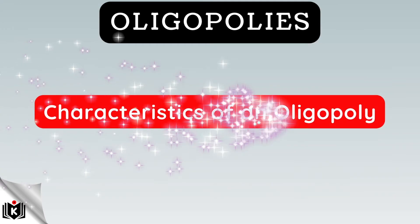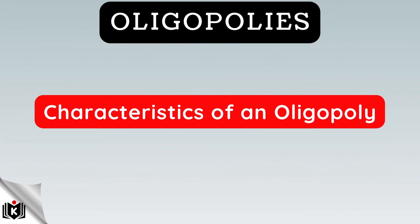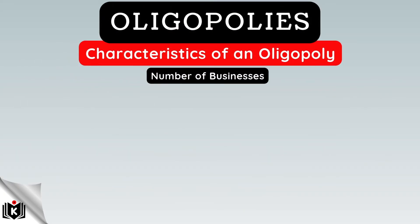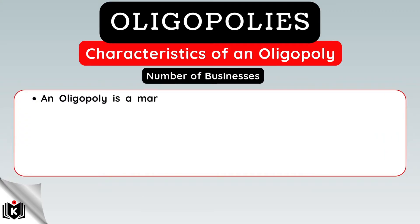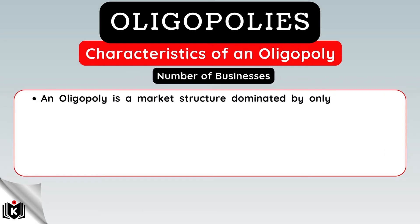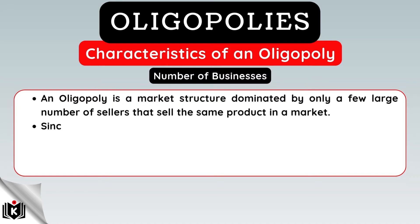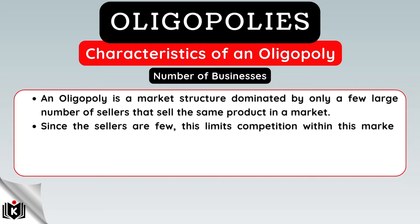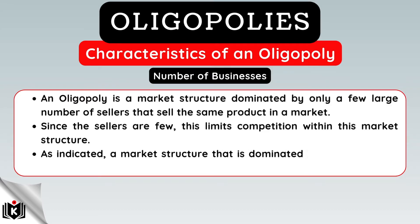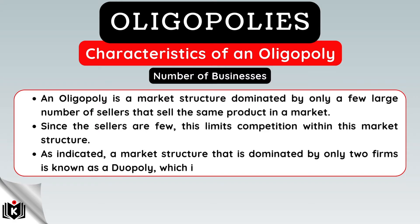An oligopoly has a number of characteristics. An oligopoly is a market structure dominated by only a few large firms supplying a product in a market. Since the sellers are few, this limits competition within this market structure. A market structure dominated by only two firms is known as a duopoly, which is a form of an oligopoly.